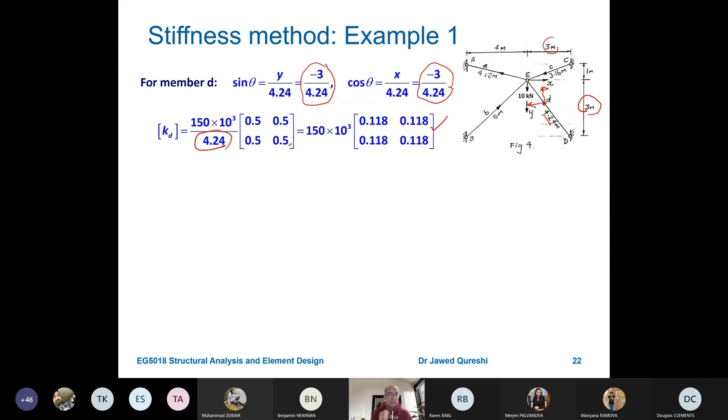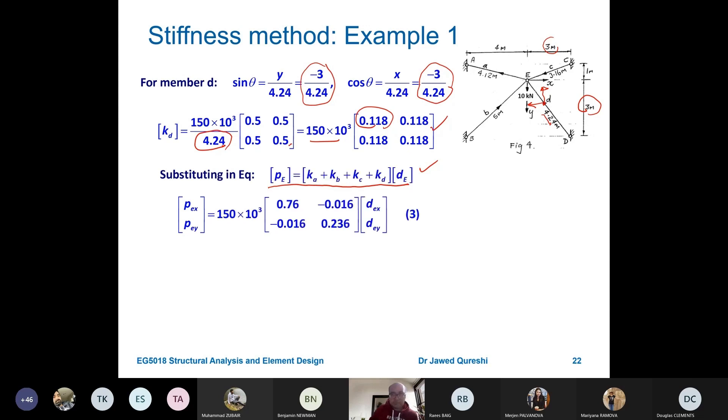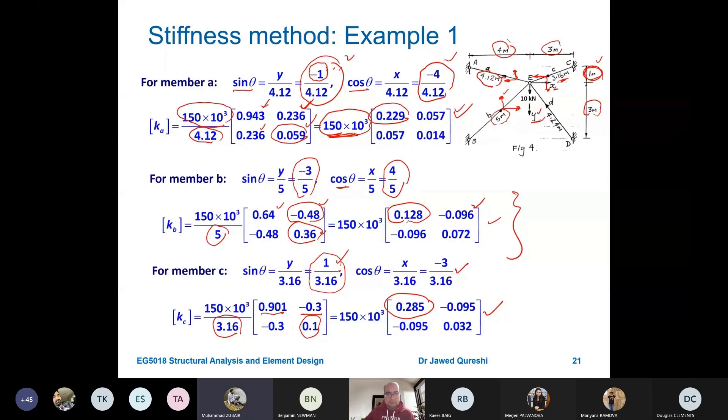Now why did we work out this KA, KB, KC and KD? The reason is that because the global equation was PE is equal to KA, KB, KC and KD into bracket dE. So this was our global equation adding up all those values. Starting from here, take first term of this 0.229 plus 0.128 plus 0.285 plus 0.118. I'm getting 0.76. In the same way, add up all these corresponding elements within the matrices to add these stiffness matrices. 115 times 10 to the 3 is common. So that's why it is kept common. dE has got two components, x and y. So that's why we write it dE, x and dE, y. Force has got two components, x and y. So that's why we write p, x and p, y. And the final matrix is the summation of all these values or of all these matrix? Yes, definitely.